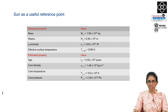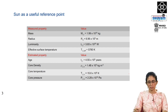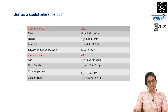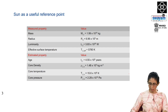The surface temperature of the sun is around 5780 Kelvin. The estimated properties derived indirectly include the age, which is around 4.5 billion years; the core density, which is around 1.5×10^5 kg/m³; the core temperature, which is 15 million Kelvin — compare this with the surface temperature of around 6000 Kelvin; and the core pressure, which is of the order of 2.3×10^16 Pascal, compared to atmospheric pressure of around 10^5 Pascal. So the pressure at the center of the sun is nearly 10^11 atmospheres.